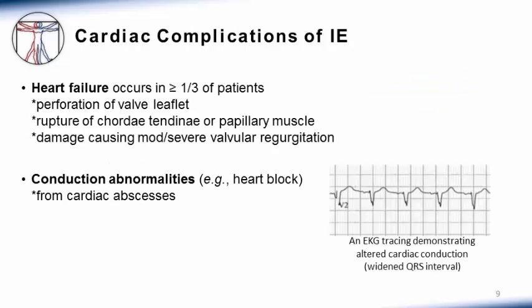Looking at infective endocarditis from the perspective of different organ systems, cardiac complications are common. Heart failure is a major complication, occurring in at least one-third of patients. This can be due to perforation of the valve leaflet, rupture of the chordae tendineae or papillary muscle, or simply damage enough to cause moderate to severe valvular regurgitation. Cardiac abscesses, either paravalvular or myocardial, can lead to conduction disturbances such as heart block. Pictured here is an EKG tracing demonstrating altered cardiac conduction.